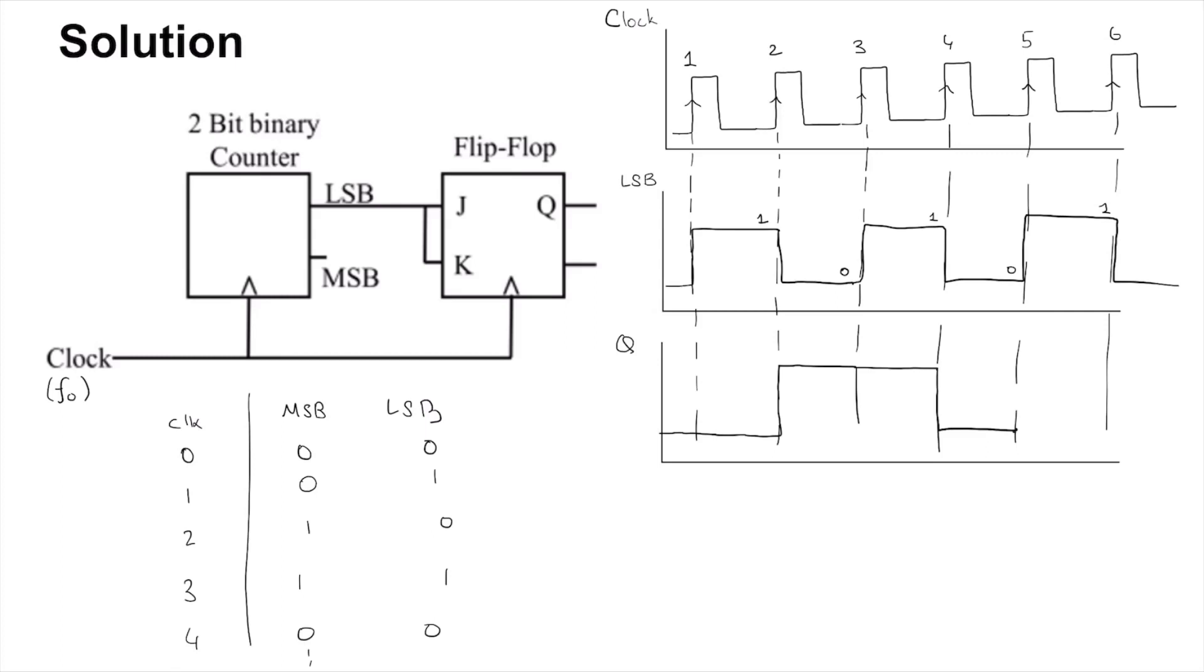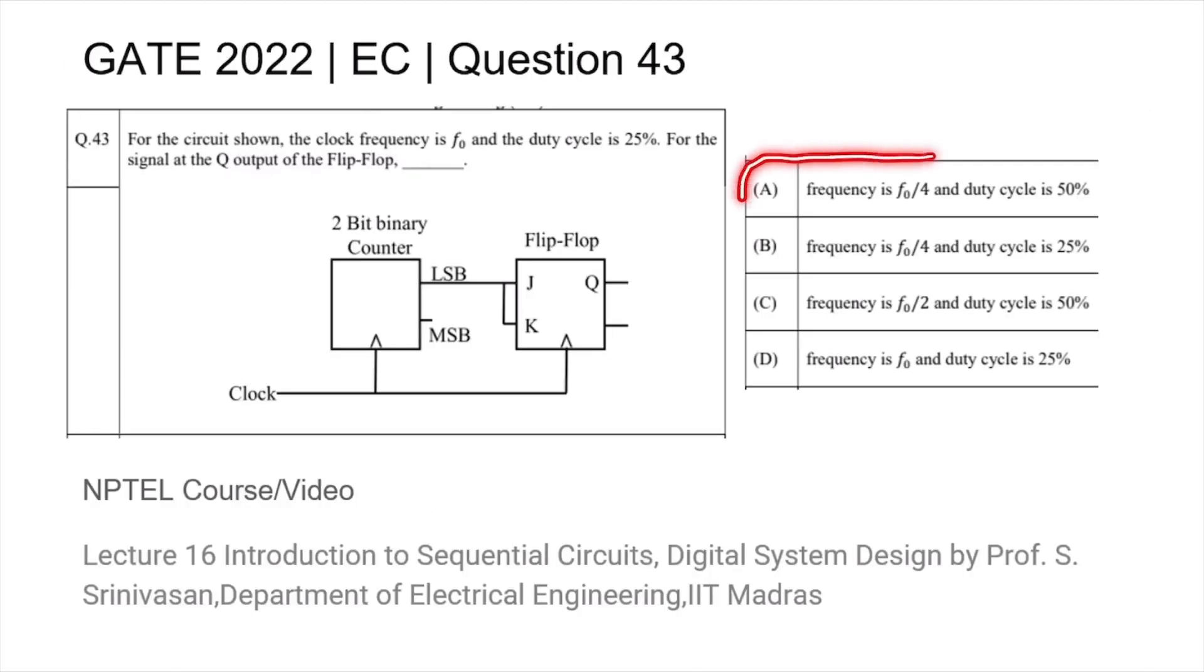Finally this pattern will go on, so this will be the final clock waveform. You can see that the period from here to here corresponds to 1, 2, 3, 4—so the time period of Q is 4 times the time period of the clock. That is, the frequency of Q is going to be 1/4 of F0, which is the clock frequency. Thus the answer is A.